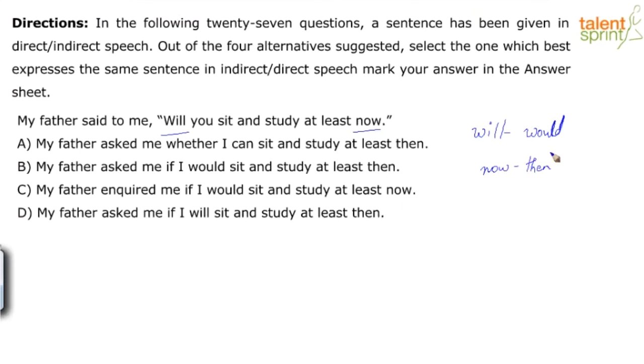Looking at the options, option C I'm ruling out because there's no then, it's taking up now. A says my father asked me whether I can sit and study at least then. In A I have can and not would, so I will eliminate that. D: my father asked me if I will - it's not changed. Obviously the answer is B. If you are thorough with the rules, you will quickly identify the answer.